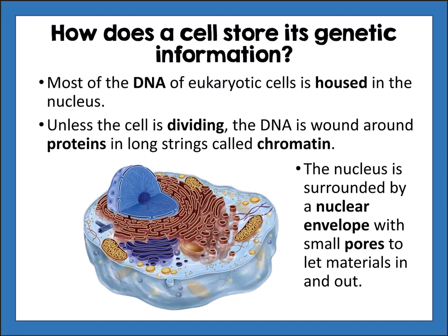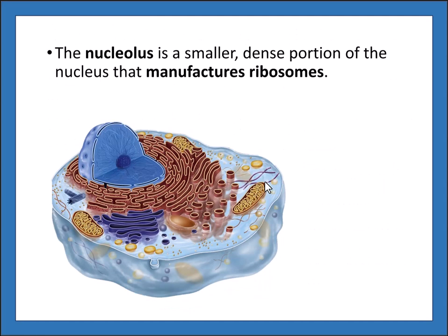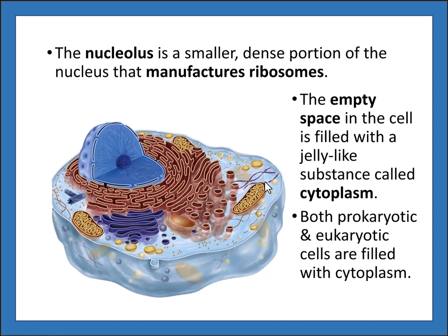The nucleus is surrounded by a nuclear envelope — a membrane with small pores that let materials in and out. Inside the nucleus is the nucleolus, a smaller dense portion that manufactures ribosomes. The empty space in the cell is filled with a jelly-like substance called cytoplasm. Both prokaryotic and eukaryotic cells are filled with cytoplasm — it's not just empty space inside the cell.